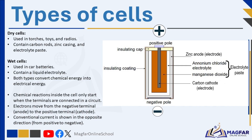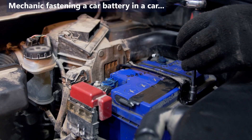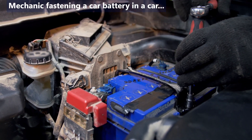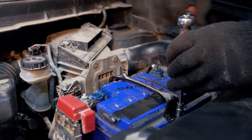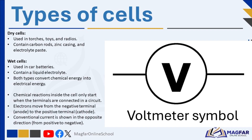Each cell has two terminals, clearly marked with a plus for positive and a minus for negative. A car battery is an example of a wet cell because it contains liquid electrolyte. Even though wet and dry cells look different, they both convert chemical energy into electrical energy using the same principles. Inside every cell, chemical reactions only occur when the cell's terminals are connected through a circuit, allowing electrons to flow from the negative terminal (anode) to the positive terminal (cathode). Interestingly, we show the conventional direction of current as moving from the positive terminal to the negative terminal, opposite to the actual electron flow. To measure the voltage produced by a cell, we use an instrument called a voltmeter, which measures potential difference in volts (V).